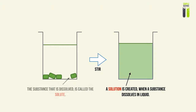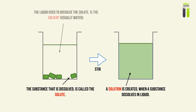The substance that we dissolve into the liquid — the substance that we initially started with and introduced into the liquid — is called a solute. For example, you dissolve salt into water and create salt water; the solute would be the grains of salt that you initially started with. The liquid used to dissolve the solute — for example, the water used to dissolve the salt — is called the solvent.